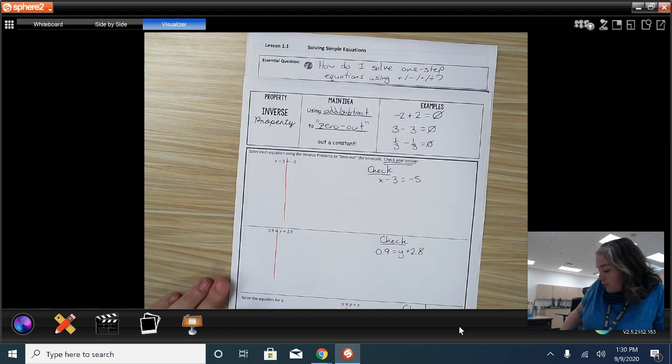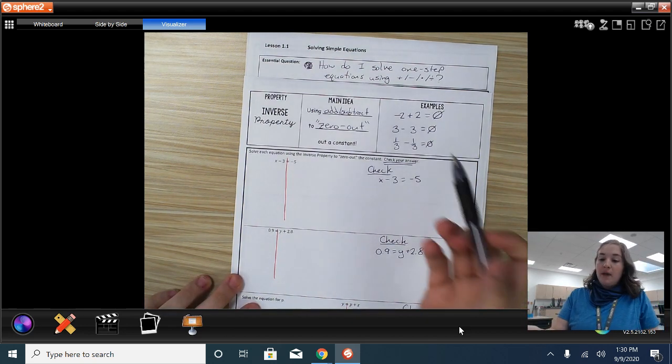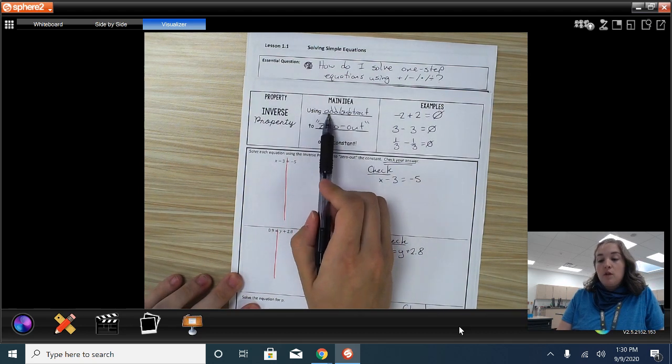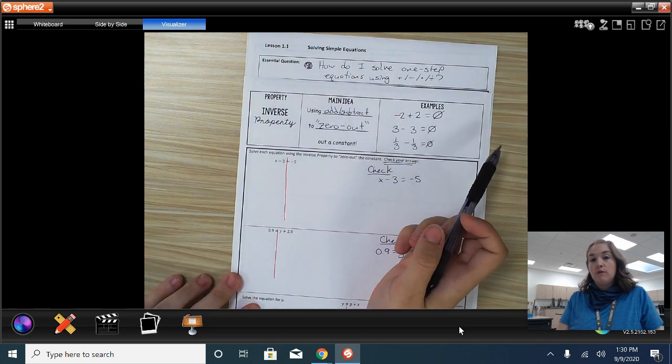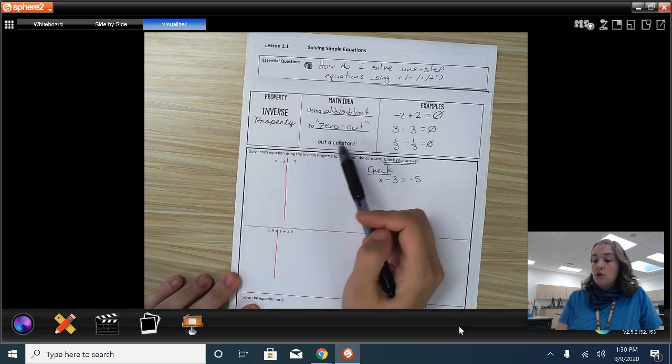My phone goes off. There we go. So, by inverse properties, I mean that you can use addition or subtraction to zero something out for a constant, all right, just for constants.